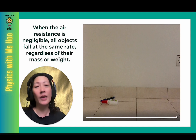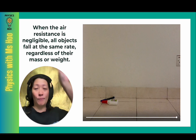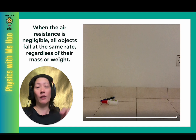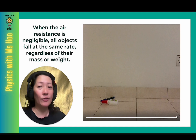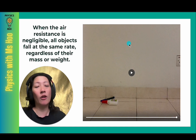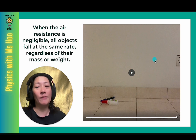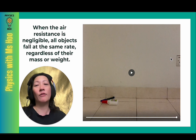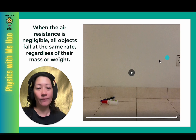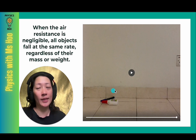Or even if a parachuter was jumping with a big parachute with a lot of air resistance, that also doesn't apply in that case. So the situation where objects fall at the same rate only happens when the air resistance is negligible, where the weight is great enough to overcome the air resistance easily. So regardless of the mass or weight of the objects, they fall at the same rate.